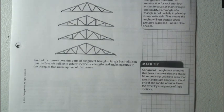Each of the truss contains pairs of congruent triangles. Greg's boss tells him that his first job will be to determine the side lengths and angle measures in the triangles that make up one of the trusses.